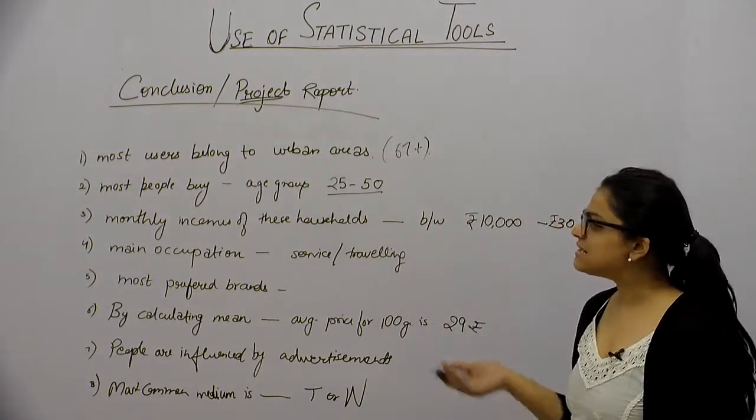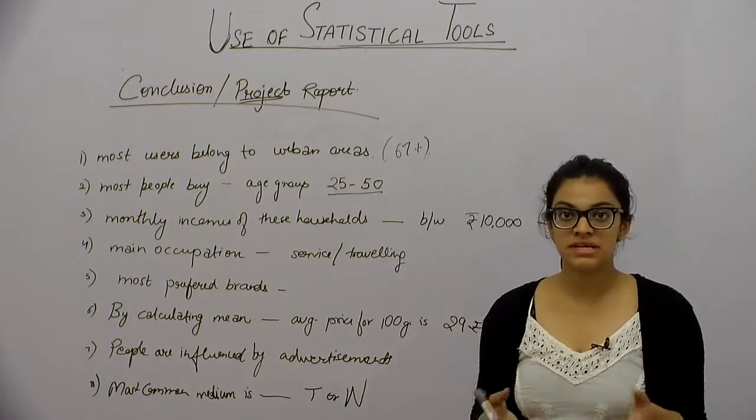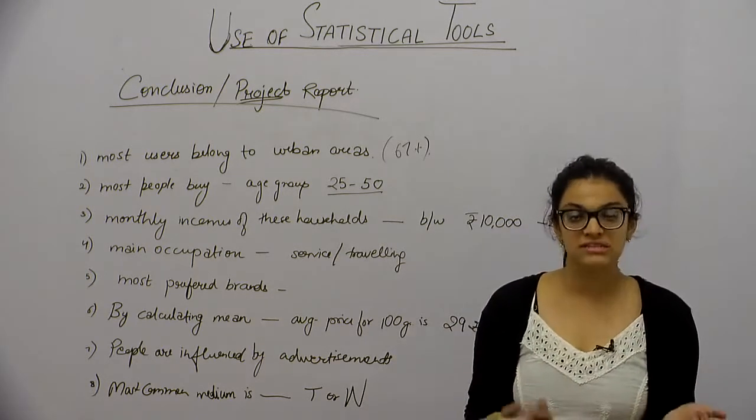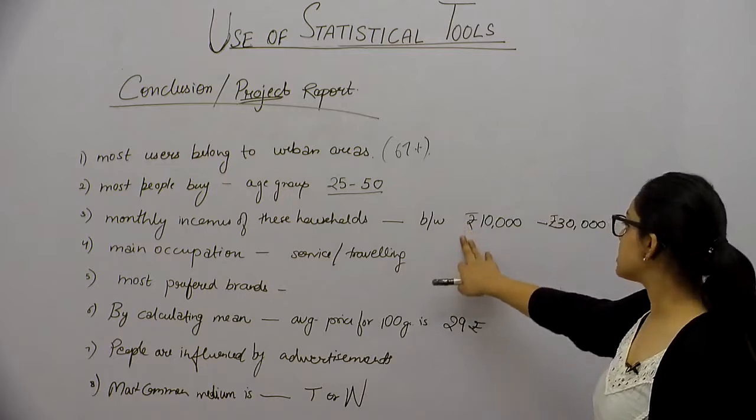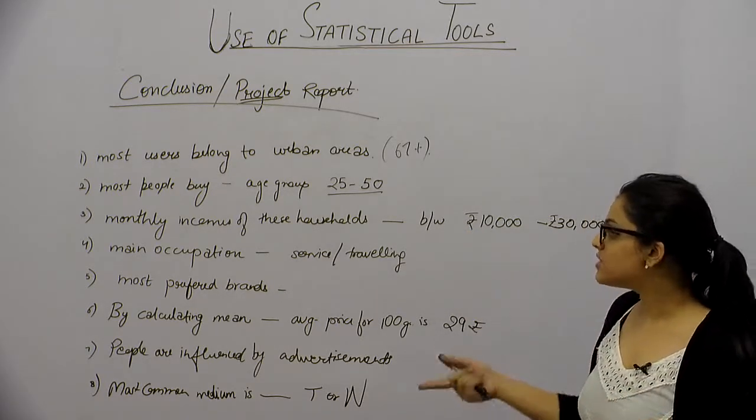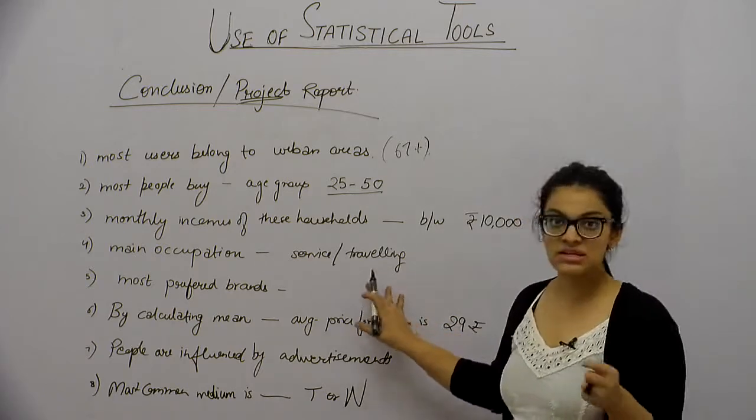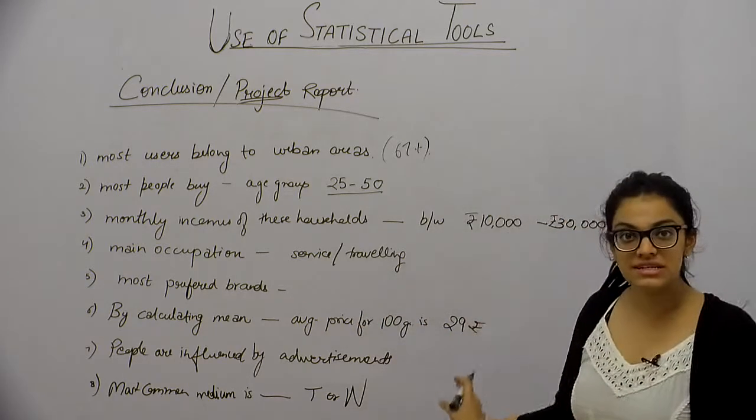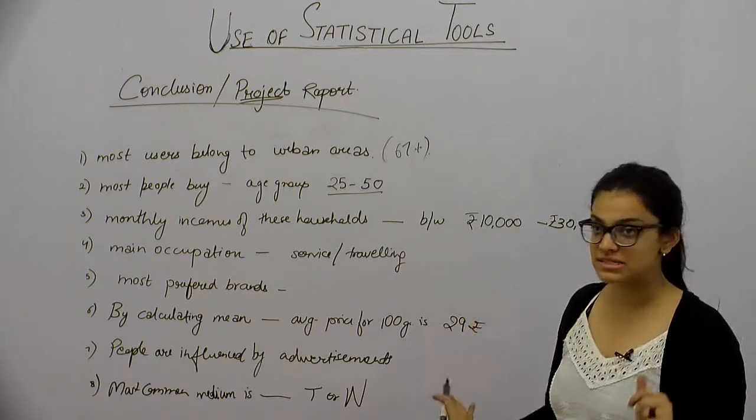And the monthly income in the household, or in their houses, they buy toothpaste. What is monthly income? It ranges between Rs. 10,000 to Rs. 30,000. And the main occupation is the service or traveling. It's all hypothetical data. This is just an example of data.